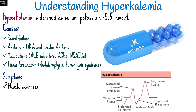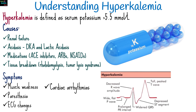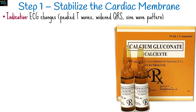Symptoms include muscle weakness, paresthesia, ECG changes, and cardiac arrhythmias. Shifting potassium levels, especially in cases of hyperkalemia, must be done carefully to avoid cardiac and neuromuscular complications.